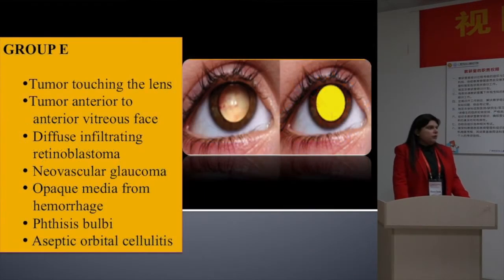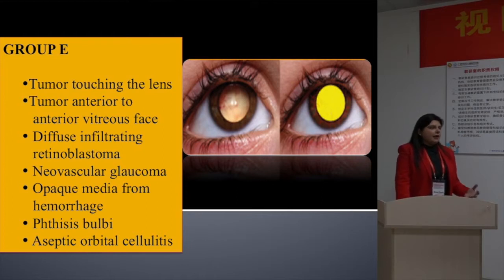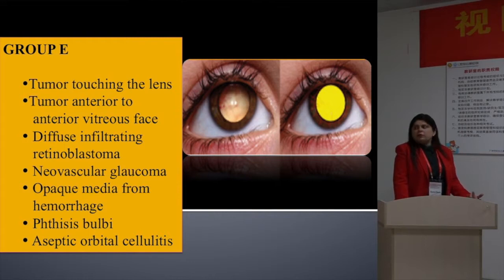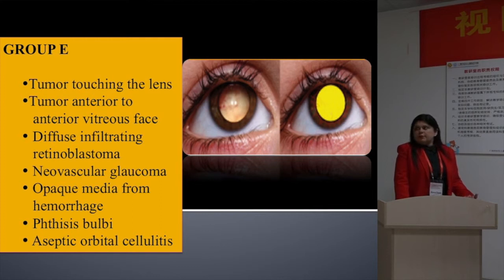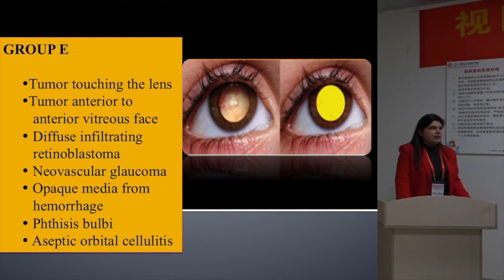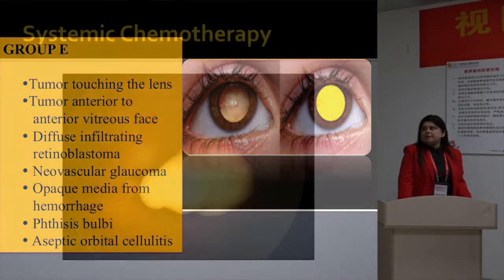Group E — we do not use systemic chemotherapy unless it is bilateral advanced disease and we are trying to save at least one eye. Unilateral Group E cases we treat only by upfront enucleation. These are the Group E cases in which, if any of these features are present, we do not use systemic chemotherapy at our center.